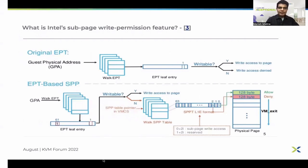So what is SPP? Sub-page protection is a new feature by Intel starting with Ice Lake servers. It allows us to enable or disable write protection on a sub-page of size 128 bytes. Basically, for every 4K page we have 32 sub-pages of 128 bytes. SPP provides an extra page table structure called SPPT, along with EPT, for storing access flags for any GFN. You need to set SPPT in every VMCS similar to EPTP. The L1 entry of SPP page tables contains the access permission vector of that specific GFN.